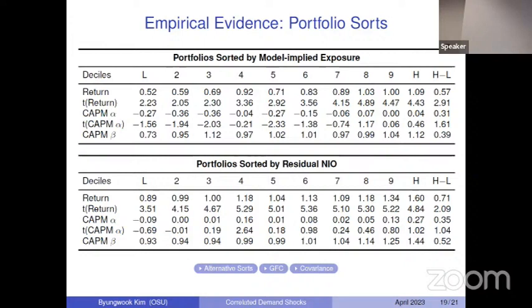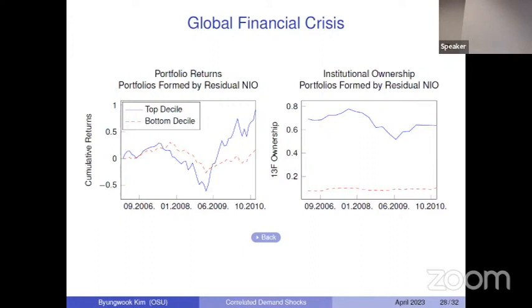This risk does materialize during bad times such as the global financial crisis of 2008, because stocks with high exposure to correlated demand from benchmarking experienced sharp price crashes associated with massive selling pressures among their institutional stockholders. The ownership level for stocks in the top portfolio was about 80% right before the global financial crisis, but it decreased to below 60%, representing massive correlated selling pressure among institutional investors.